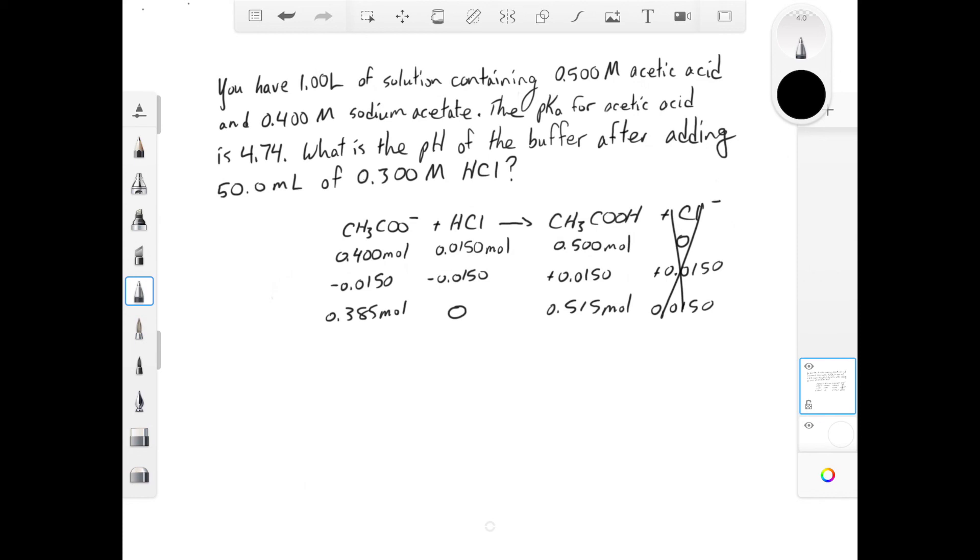Or, we could recognize that the total volume is going to be the same for acetate and for acetic acid, and that the volume terms will cancel in the Henderson-Hasselbalch equation. In which case, we can just use the number of moles. If we do that, we end up with a pH of 4.61, which is down from the initial value of 4.64.